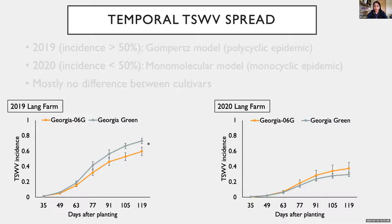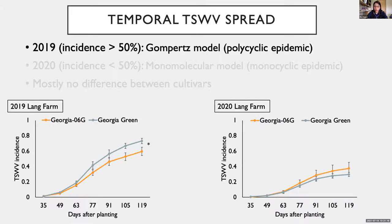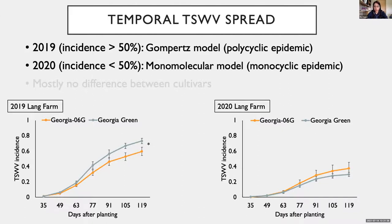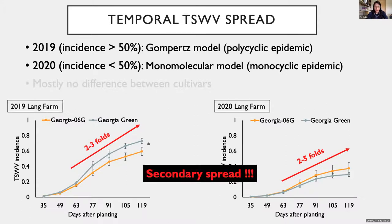For temporal spread, we observed that TSWV infection progressed throughout the season. When we fit the accumulated TSWV incidence over time to temporal spread models, we found that when the final incidence was higher than 50%, as observed in 2019, the best model fit was the Gompertz model. This model suggested the epidemic was polycyclic, involving a lot of secondary spread. On the other hand, when the final incidence was lower than 50%, as in many cases in 2020, the best model fit was the monomolecular model, suggesting a monocyclic epidemic with limited secondary spread. In addition, incidence increased two- to fivefold from 63 to 119 days after planting in both years, which was highly likely caused by secondary spread, as we found only one thrips peak in the early season.